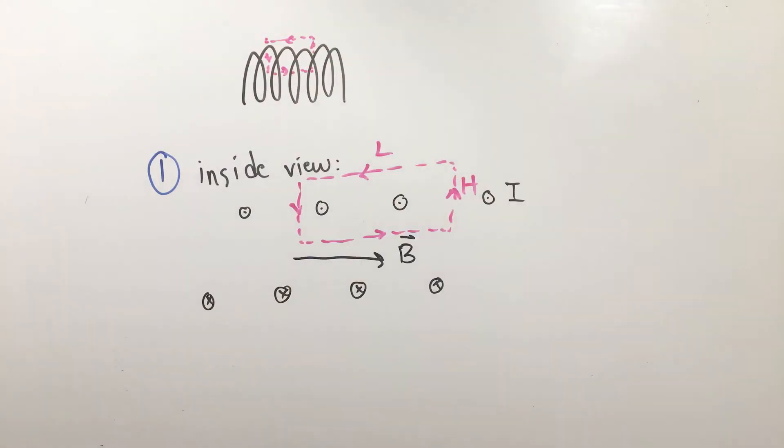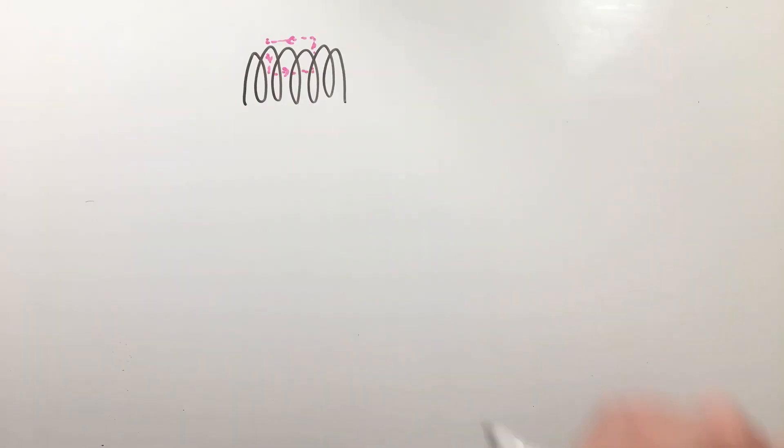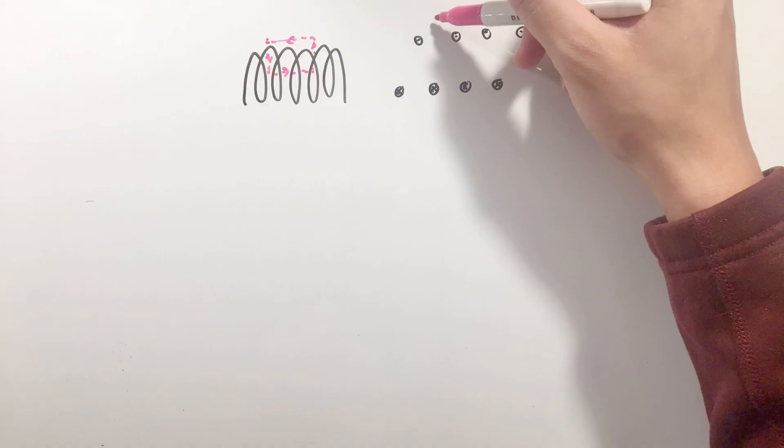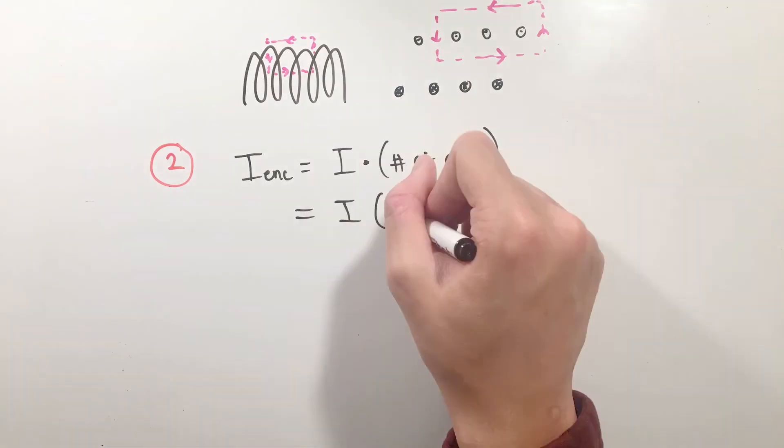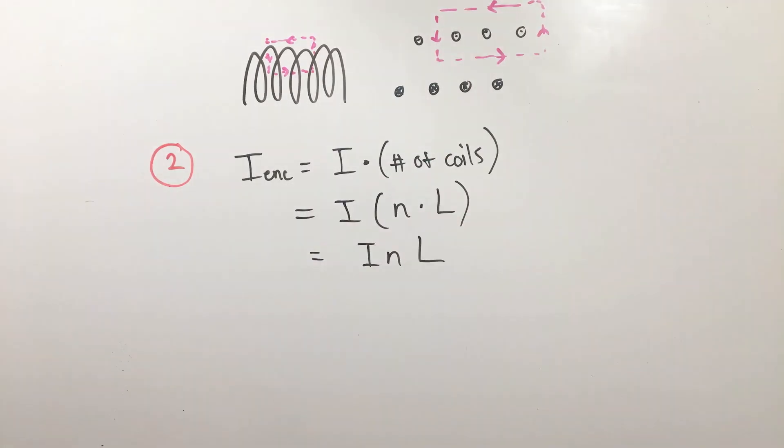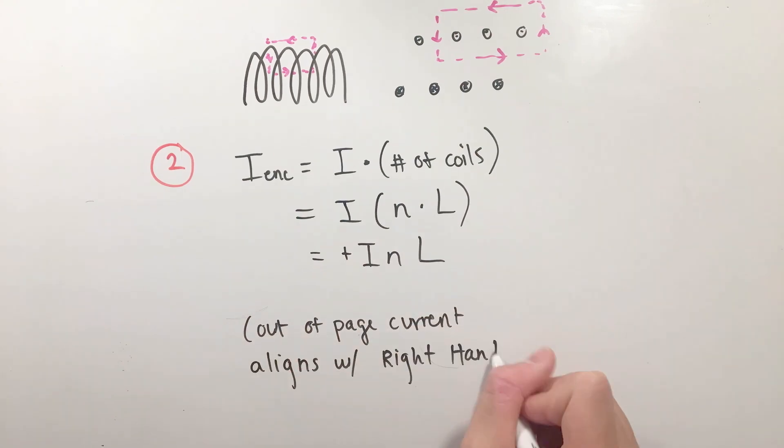For step two, it's important to note that the current enclosed is not actually just I, but rather all of the I's from each individual coil combined. To find this value, we simply need to multiply I by the number of coils in our Amperian loop, or I times a quantity, small n times l. Using the right-hand rule, we can see that this value for our counterclockwise direction is positive.